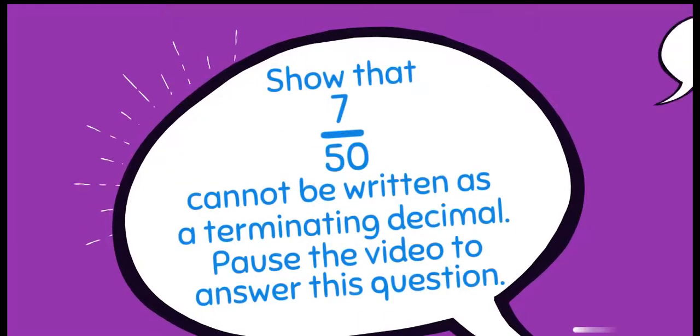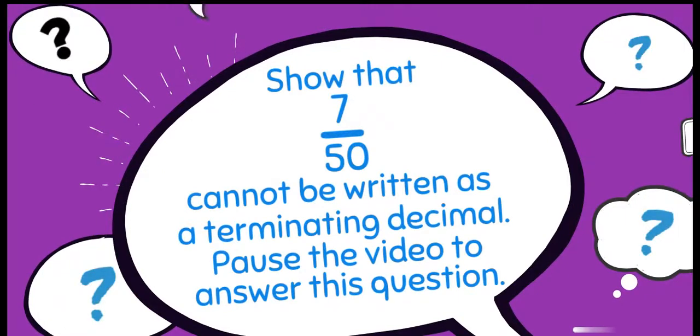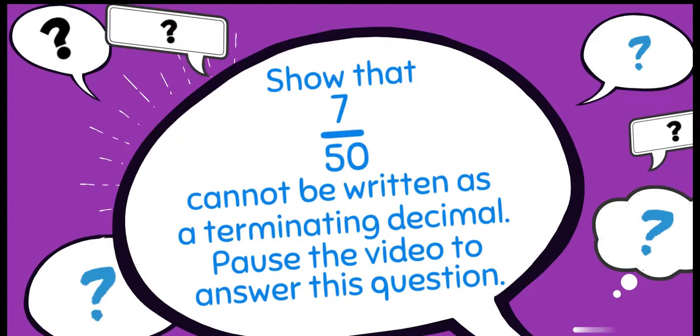Show that 7 over 50 cannot be written as a terminating decimal. Pause the video to answer this question.